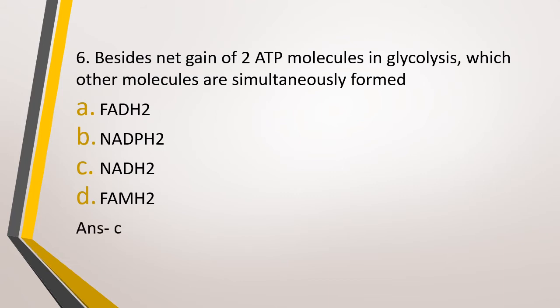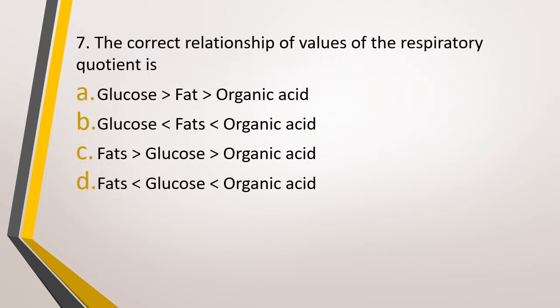Question number 7. The correct relationship of the values of respiratory quotient is? Option A: Highest in glucose, followed by fat, then organic acid. Option B: Highest in organic acid, followed by fat, then least in glucose. Option C: Highest in fat, followed by glucose, then organic acid. Option D: Highest in organic acid, followed by glucose, and least in fat. The correct answer is Option D.